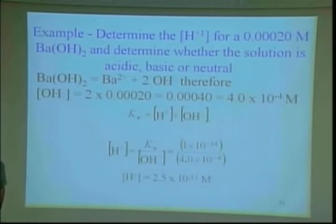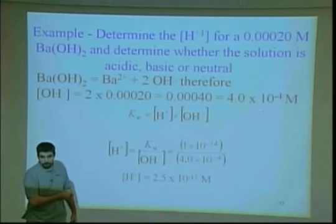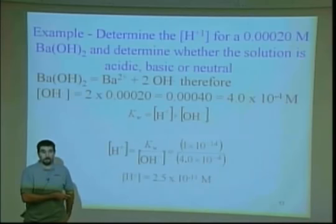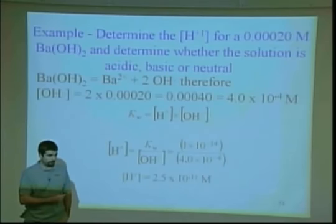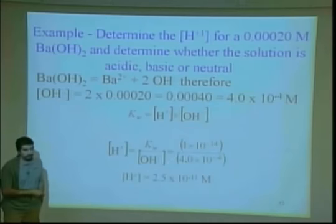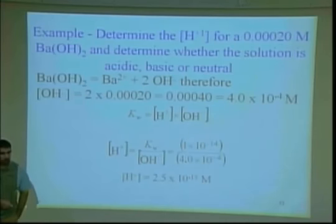Why is this a basic solution? Look at the concentration of hydroxide: 4×10⁻⁴. Is that more or less than 1×10⁻⁷? Look at the exponents — minus 4 versus minus 7. Minus 4 is bigger, so you have more hydroxide present than in a neutral solution. Now look at the hydrogens: minus 11. That is much less than what you would have in a neutral solution. So you have more hydroxide than normal and less hydrogen than normal — that's a basic solution.